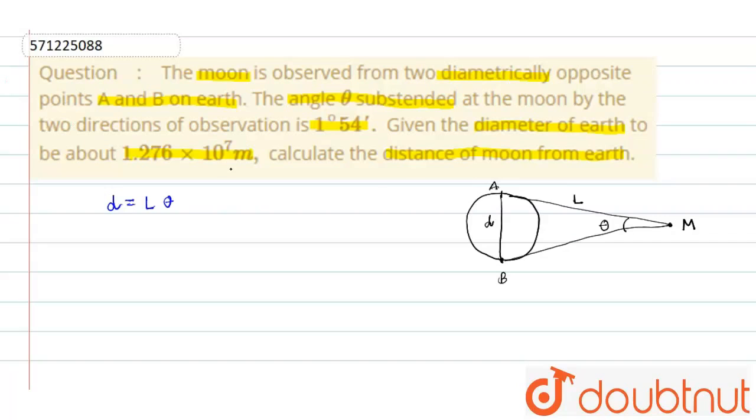As given in this question, theta = 1 degree 54 minutes. We know that 1 degree = 60 minutes, so 1 degree 54 minutes = 114 minutes. Converting 114 minutes into degrees, we get 114 minutes = 114/60 degrees.